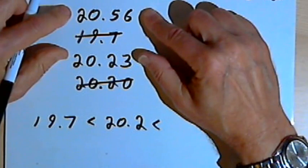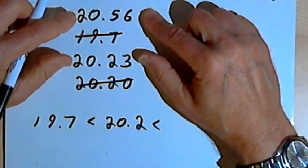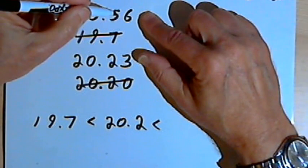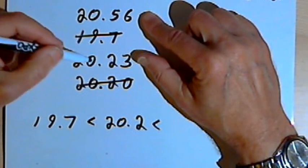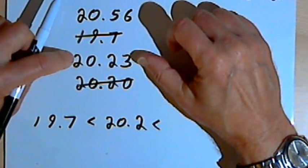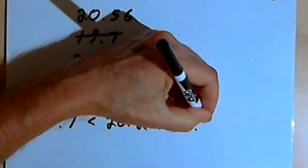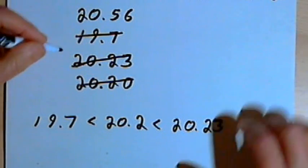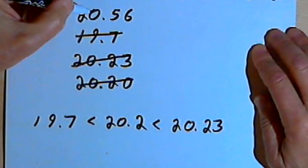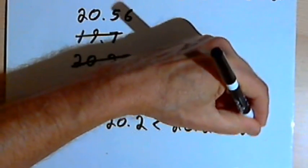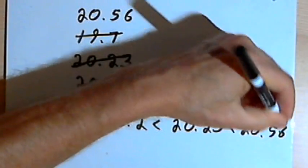If I go back and compare what I have left, I've got, in that tenths column again, one number with a 5 and one number with a 2. So the number with a 2 is the next smallest number. That's 20.23. I'll cross that number off of my vertical column. The only thing I have left is 20.56. So that's going to be my largest number.